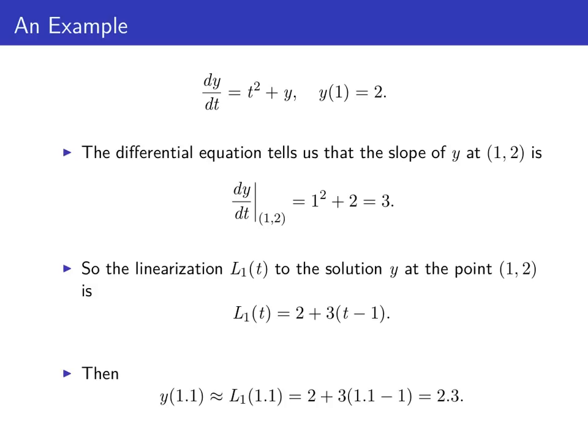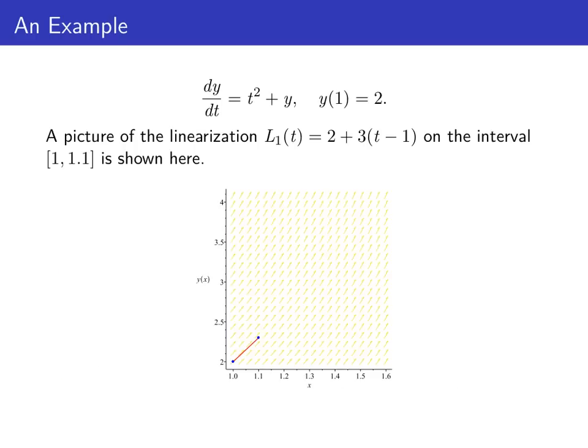The linearization is a good approximation to our function as long as we stay close to the base point. So we can approximate y(1.1) with L₁(1.1), just by substituting in 1.1 for t, and we see that L₁(1.1) = 2.3, so that's an approximation to our solution at 1.1. We can begin to construct an approximate graph of our solution by drawing our linearizations. Here's the graph of L₁ on the interval from 1 to 1.1.